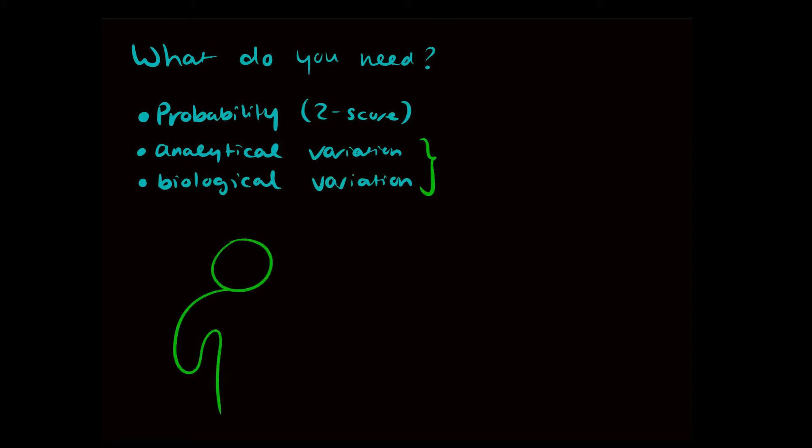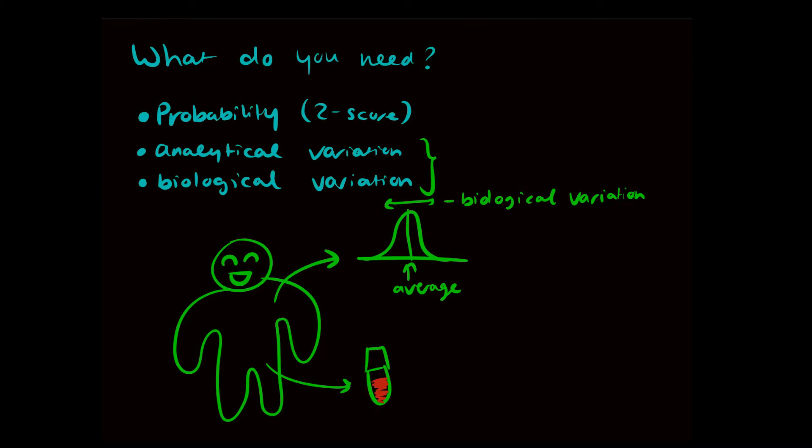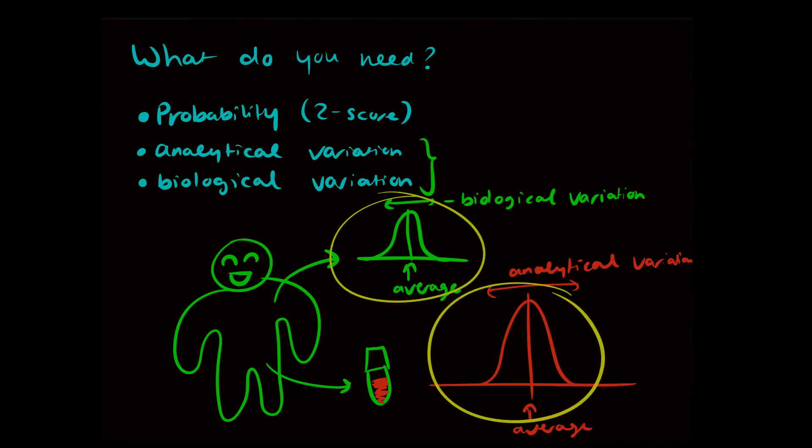Let's look at these variations. Suppose we have a person and we take a sample a number of times. We will get a bell curve with an average. The width of this curve is the biological variation. If we take a blood sample of this patient and measure it multiple times, we also get a bell curve with an average, and the width of this curve indicates the analytical variation. These two combined is the total variation that we can obtain when measuring serial results.